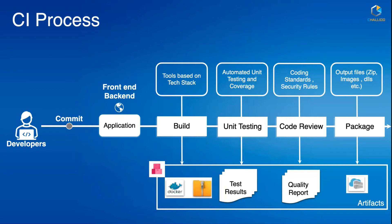This is a very basic CI process that you need to have even before thinking about any additional features or advanced ideas. We'll try to cover the tools and various processes that can be used, but this is a high-level understanding of what a CI process involves. The output of a CI process is generally an artifact — one that can be deployed to a server to run and verify the application.